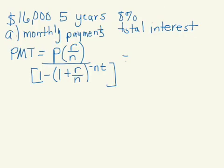In this problem, we'll calculate the monthly payment for a loan of $16,000 over a five-year period at 8% interest, and we'll calculate the total interest accrued on the account.